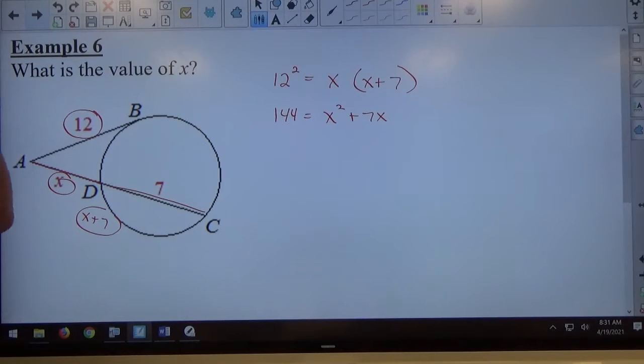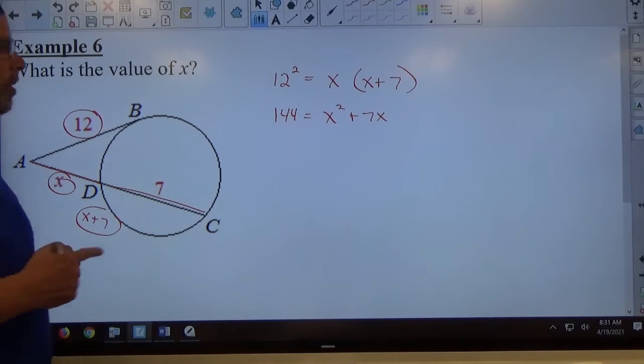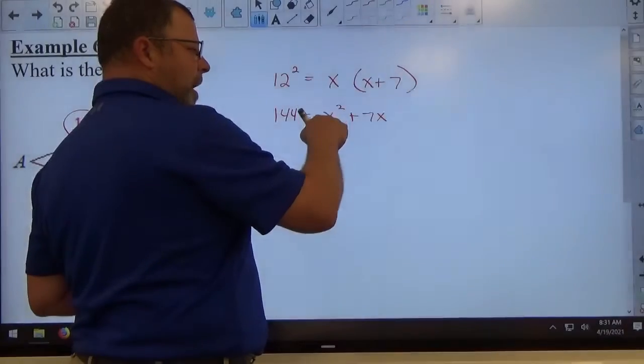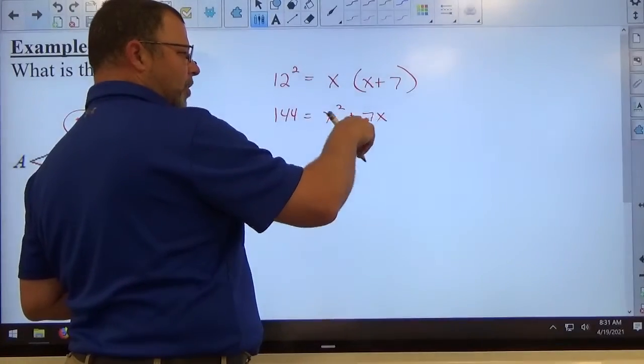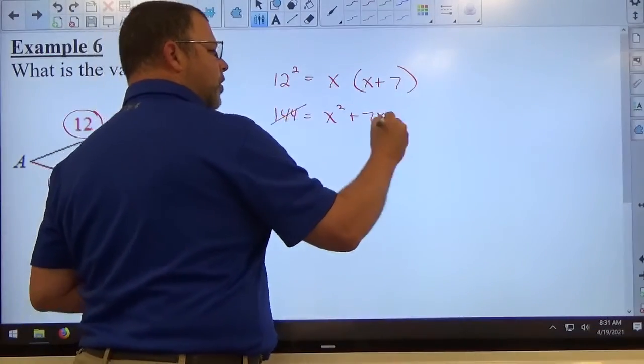When that does happen, a quadratic equation equals zero is your key on solving a quadratic. So x squared, I like x squared positive so I'm going to keep x squared and 7x on the right hand side. I'm going to move the 144 over to the right.